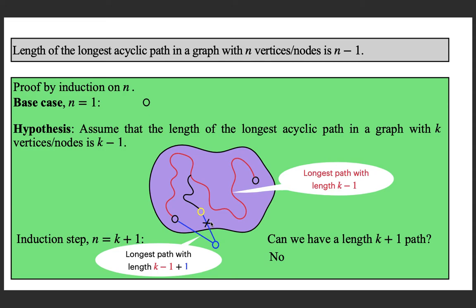So if you add one more edge, the length of the path increases by at most one. We established that when we increase the number of vertices from k to k plus 1, we get a path of length k, and a k plus 1 path is not possible. Hence we proved the theorem: the length of the longest acyclic path in a graph with n vertices or nodes is n minus 1. This is very useful information to prove non-regularity of certain languages.